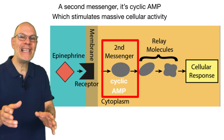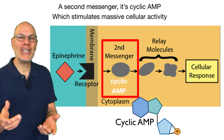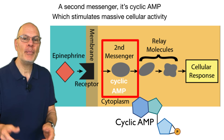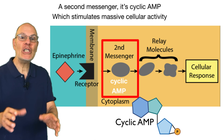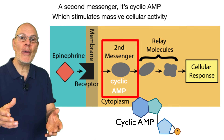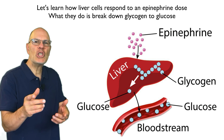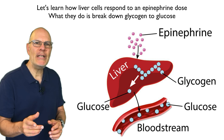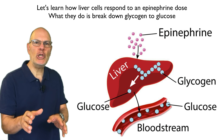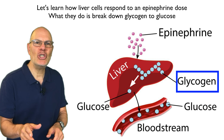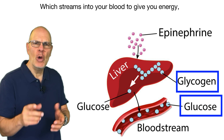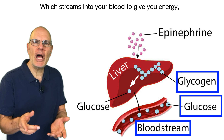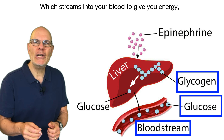So instead, it induces a second messenger of cyclic AMP, which stimulates mass cellular activity. Let's learn how liver cells respond to an epinephrine dose — what they do is break down glycogen to glucose, which streams into your blood to give you energy.